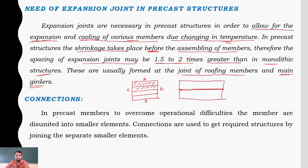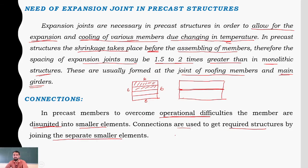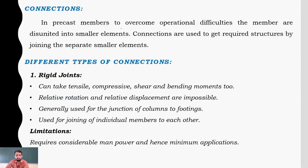Now, connections in precast members. To overcome operational difficulties, the members are disjointed into smaller elements. Connections are used to get the required structure by joining these separate smaller elements.